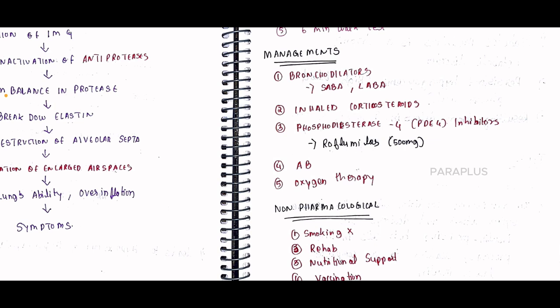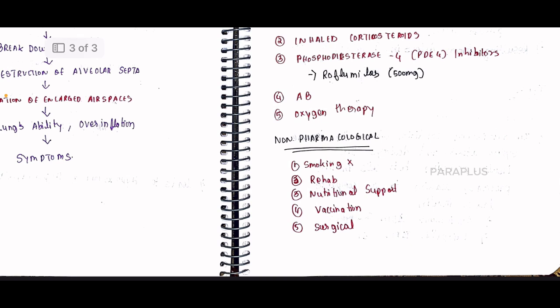Oxygen therapy is used as supportive care. Smoking cessation is essential. Pulmonary rehabilitation, nutrition support with high nutrient content, and vaccination against viruses are also recommended. Surgical options include lung volume reduction procedures to clear blocked areas.